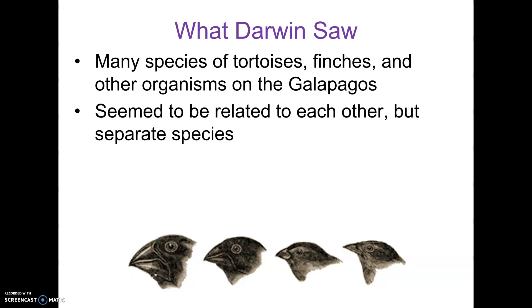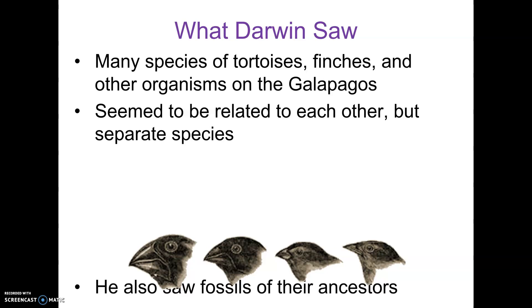He also found that they all seemed to be related to each other, even though they were separate species — meaning they didn't mate with each other; they were distinct. They seemed like they could have come from a common ancestor. The finches are a really good example, as shown in this picture. Those are four different species of finches. Their beaks are somewhat different, they're different sizes, their feet are actually somewhat different, but they also look like they share similarities — like way, way back in the past, there was a common ancestor to these species.